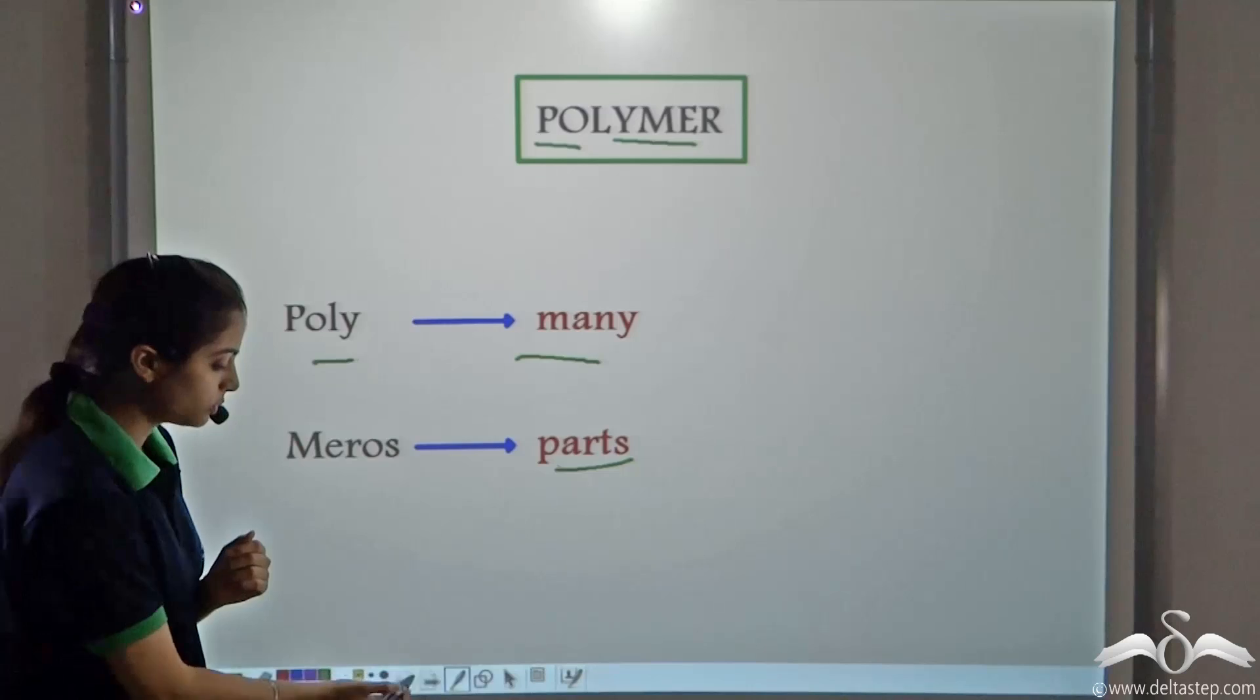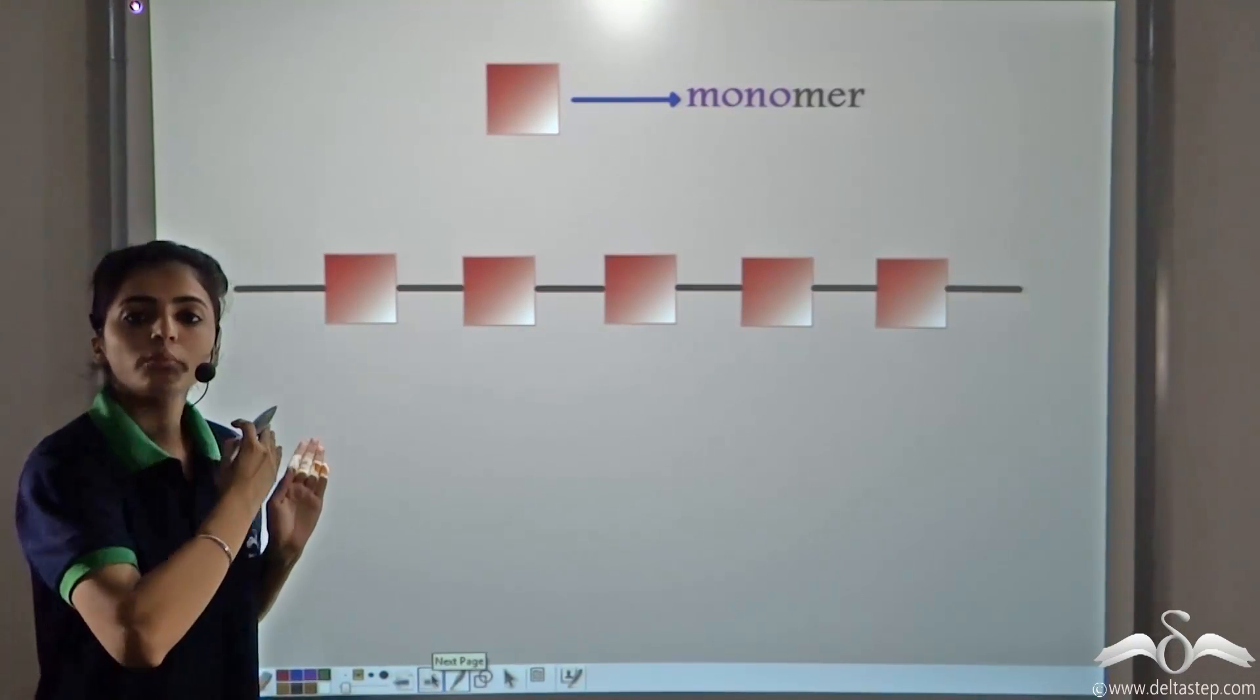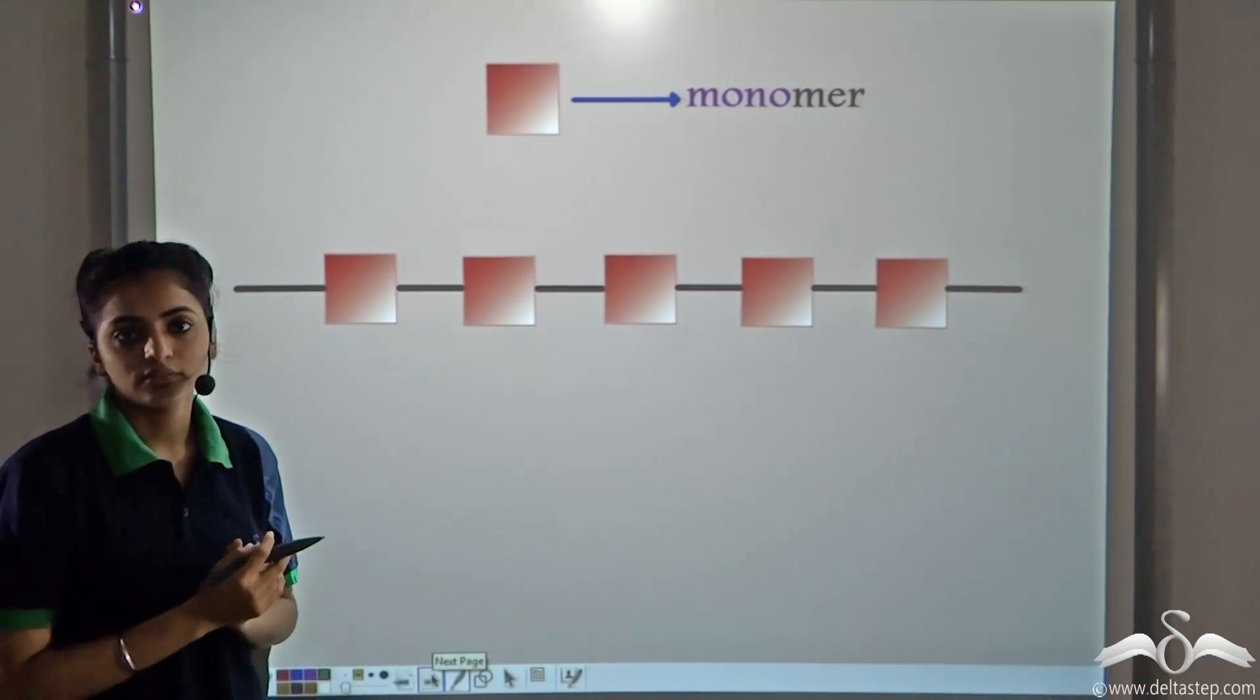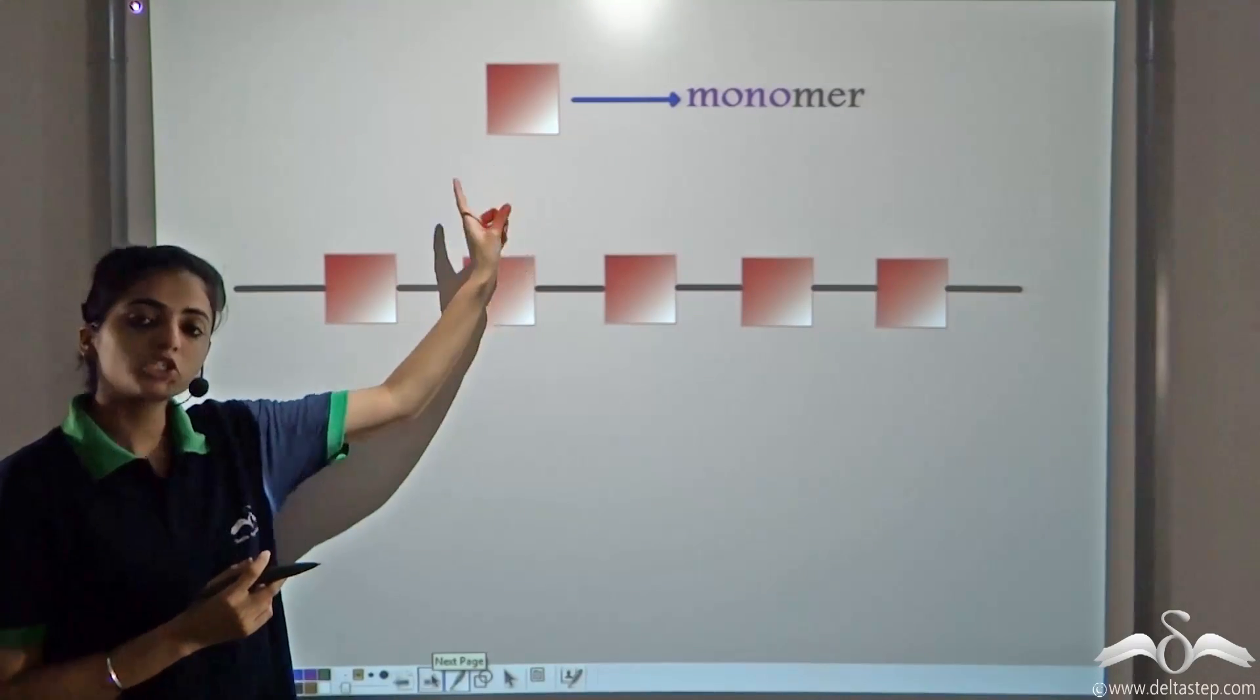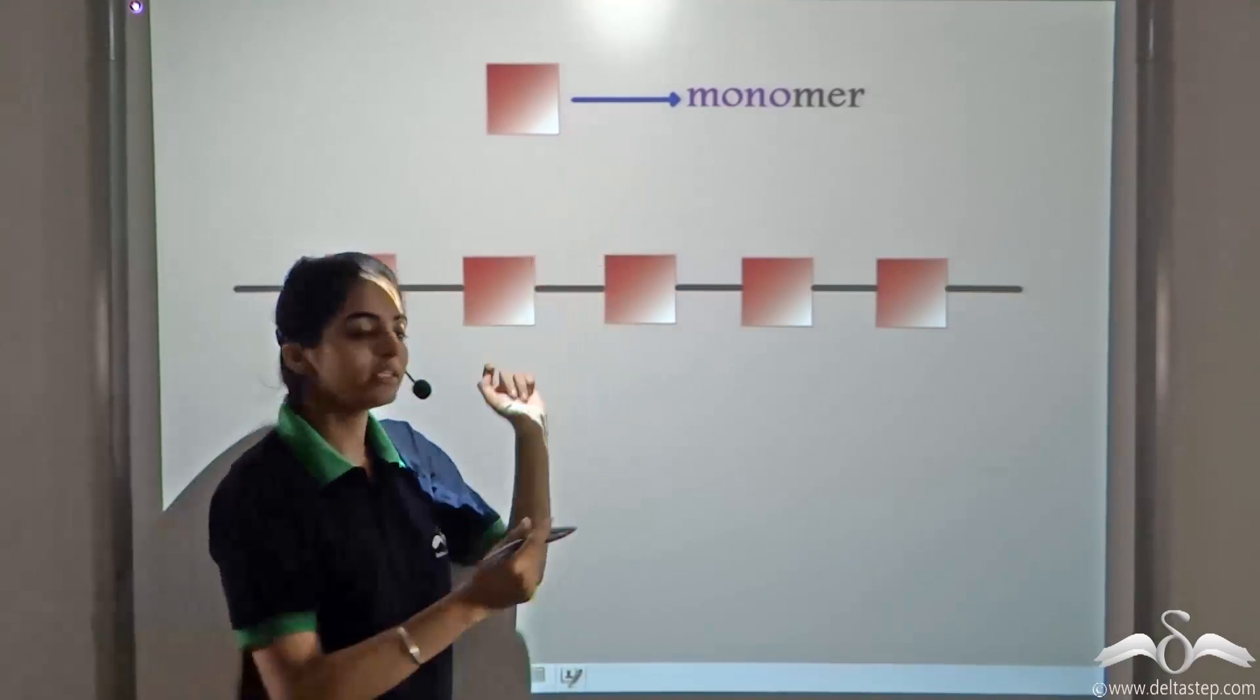When one unit, which we call monomer. So one unit, it keeps on repeating, forming a very long chain. So such a unit, which keeps on repeating, is known as a monomer. Mono means one.